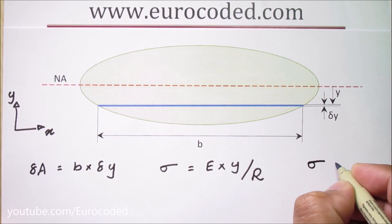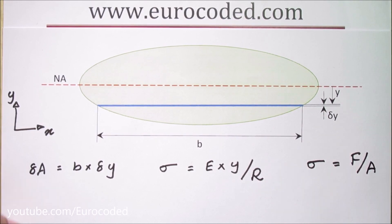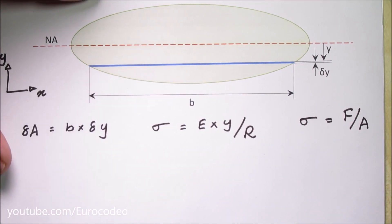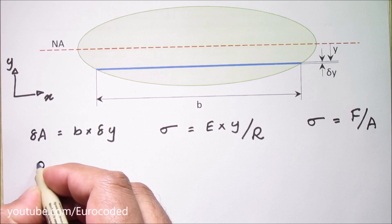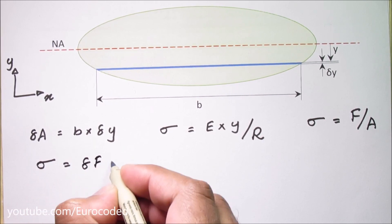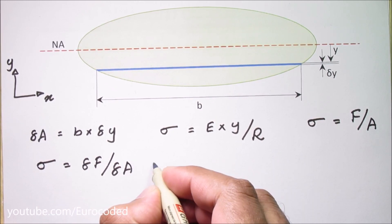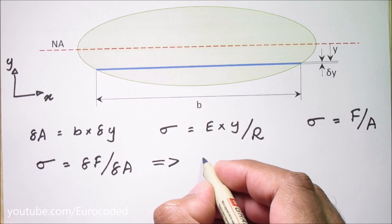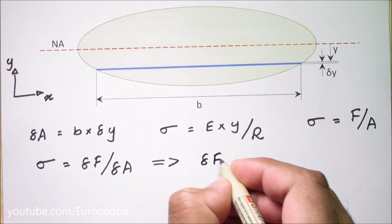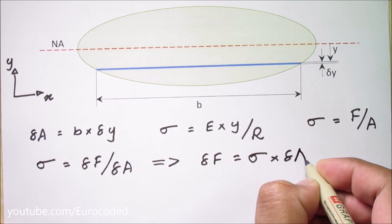We can write sigma is equal to F over A. Then we can write sigma is equal to delta F over delta A and we can rewrite this as delta F is equal to sigma times delta A.